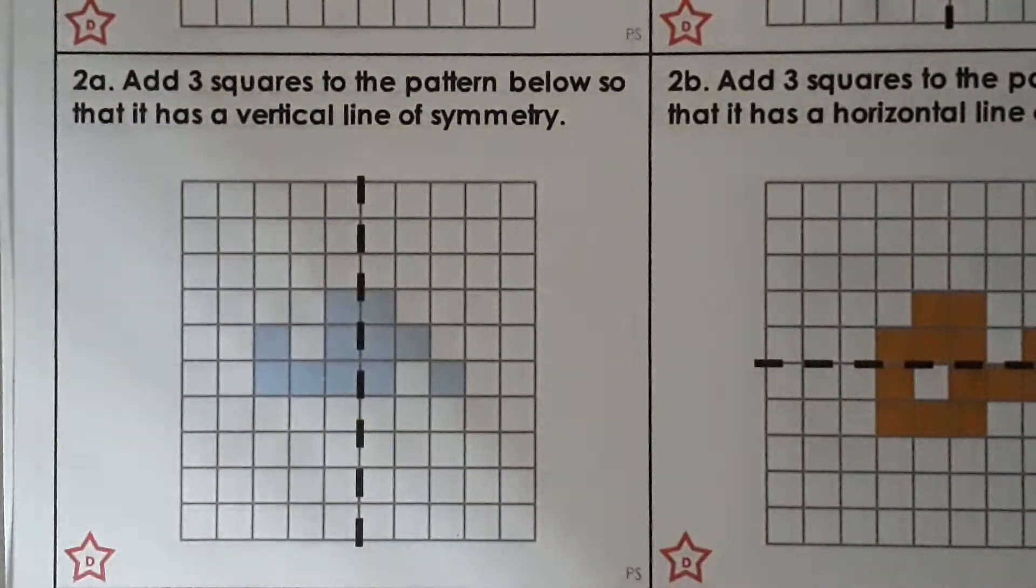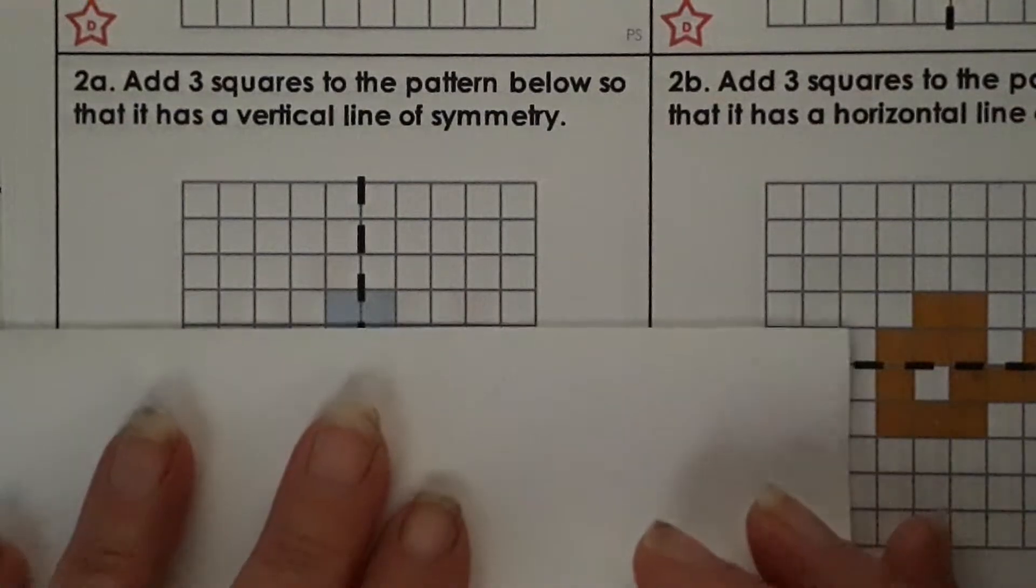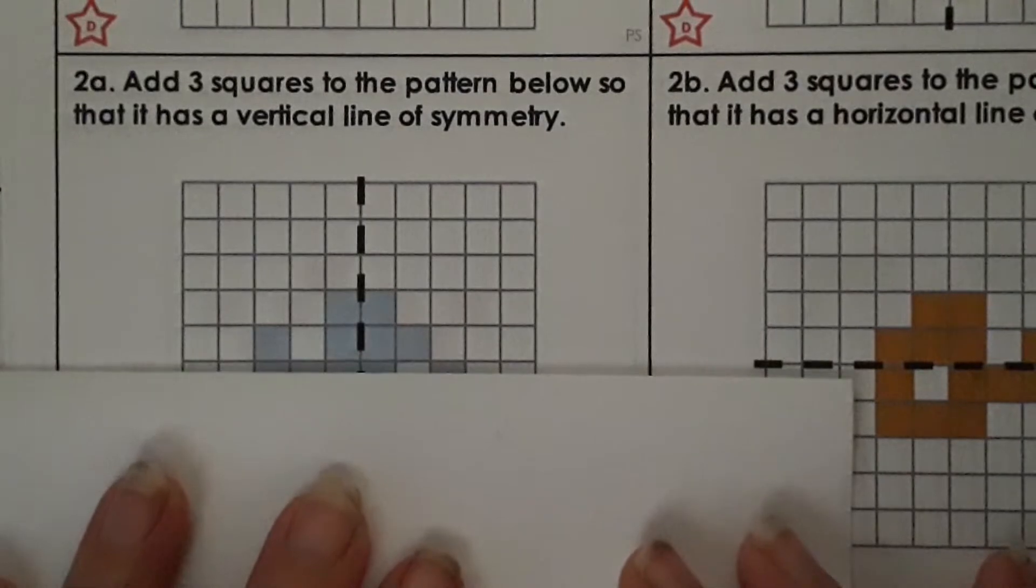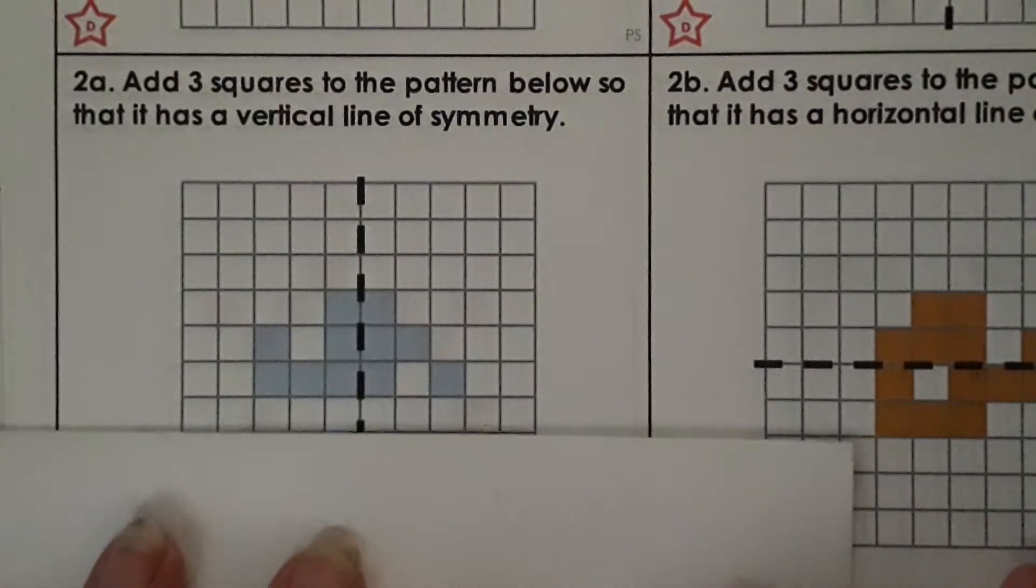There we go question 2a add three squares to the pattern below so that it has a vertical line of symmetry. So we need to add three squares so again systematically okay what is the same and what is different. All right so work out where those three squares need to go to complete the vertical line of symmetry.